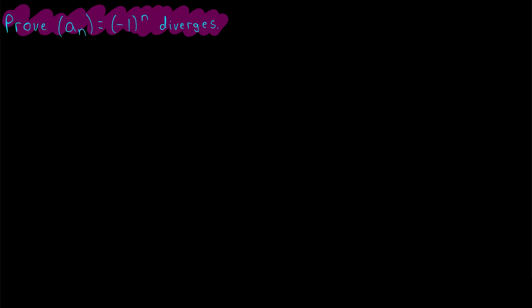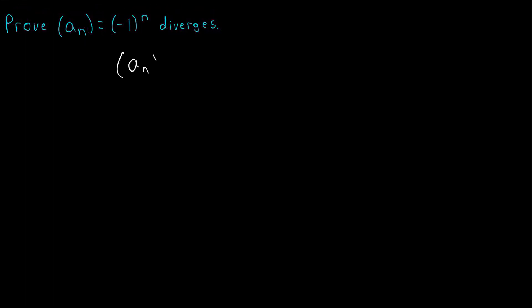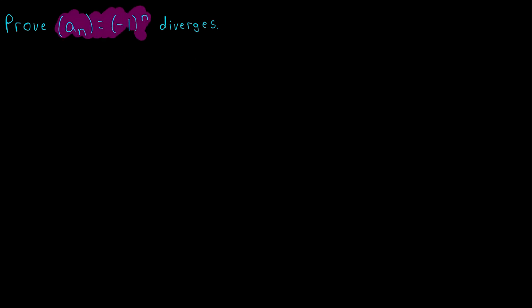In particular, we used a contradiction argument. We supposed that negative 1 to the power of n — which we're calling a_n for the purposes of this lesson — converges to some limit L, and then demonstrated a contradiction. Thus it can't possibly converge to any real number. Importantly, we didn't prove that this sequence diverges to positive infinity, nor to negative infinity. We just proved that it diverges.